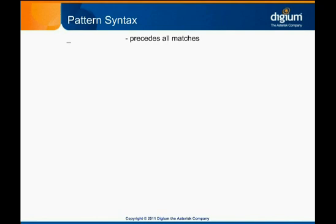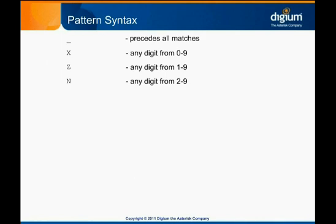In order for pattern matching to be useful, we need characters that stand for a range of other characters. Several of these are listed here. The X is most commonly used — it stands for any digit from 0 to 9. Z is any digit from 1 to 9, meaning it excludes 0. N is any digit from 2 to 9, meaning it excludes 0 and 1. These reserved characters are not case sensitive, so you can use either upper or lower case when expressing a pattern. However, using uppercase characters is the common convention.